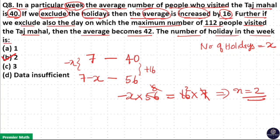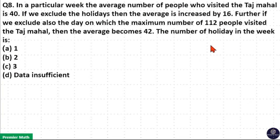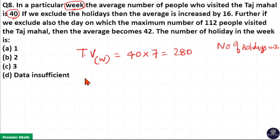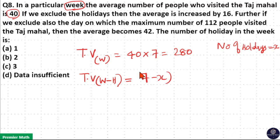Option B is the correct answer. You can also solve this question a different way. Let the number of holidays be X. The total number of visitors in a week equals average multiplied by total number of days, which is 40 times 7, equal to 280. The total number of visitors excluding holidays equals the number of days excluding holidays, which is 7 minus X.